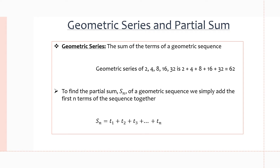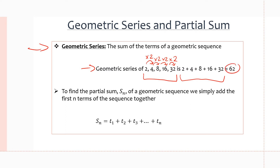What is a geometric series? A geometric series is the sum of the terms in a geometric sequence. For example, we have the geometric sequence 2, 4, 8, 16, and 32. It's geometric because we have a common ratio of 2 between each term — to get the next term we simply multiply by 2. So the geometric series is 2 + 4 + 8 + 16 + 32, which gives us a sum of 62.